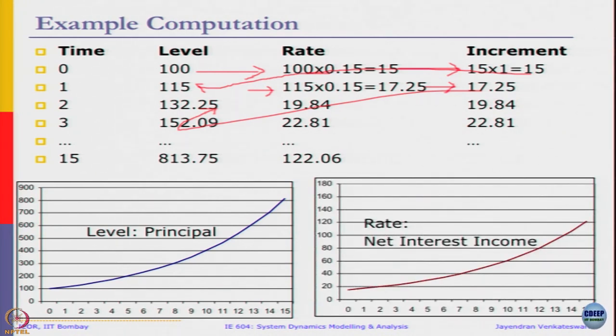This is the principal value that is the stock value and this is the net interest income, which is your net inflow rate. Net income is nothing but a constant multiplier of the stock. Since stock exhibits exponential growth, this is just a fraction of that, it will also exhibit exponential growth offset by the value of G, which in this case is 0.15.